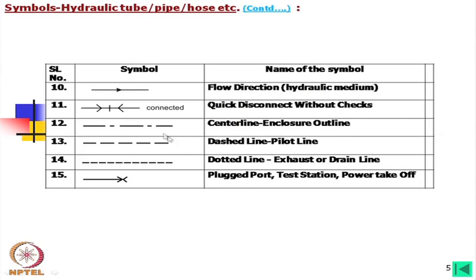This is a plug point. In a circuit, sometimes you will find a line with a cross — this indicates a plug point. Such plug points are kept occasionally, as sometimes another system needs to be connected there, or it may serve as a measuring point where a gauge can be placed to measure pressure.